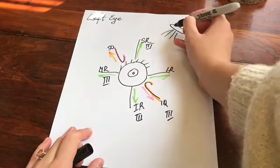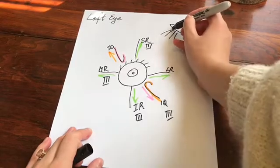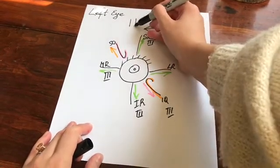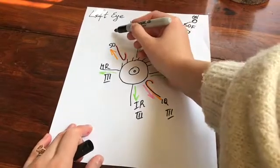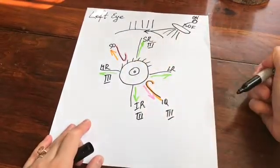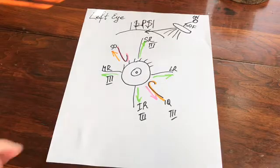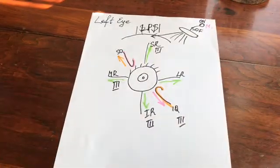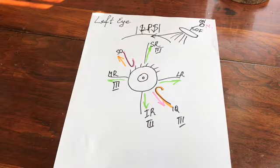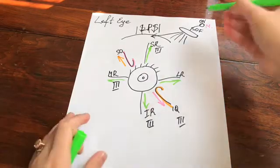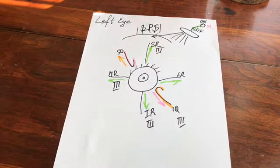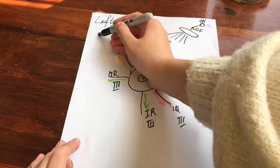The oculomotor nerve innervates four muscles in the eye, as well as the levator palpebrae superioris, which elevates the upper lid. The oculomotor nucleus has one motor function, but it's useful to remember that the oculomotor nerve also carries parasympathetic fibers.